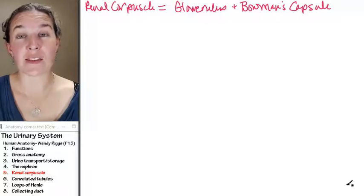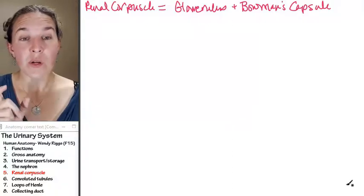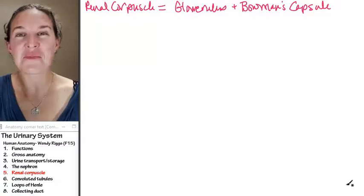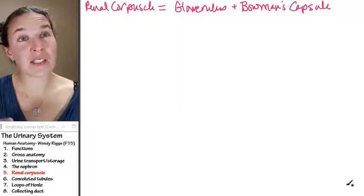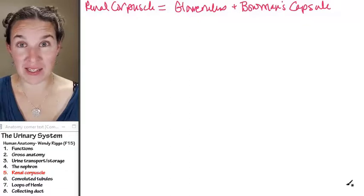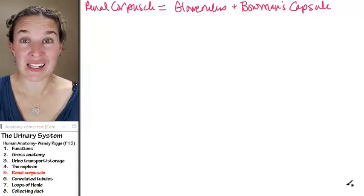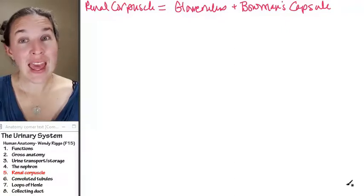Let's take a closer look at the renal corpuscle. The renal corpuscle consists of the glomerulus. The glomerulus was the capillary bed. So glomerulus contains blood and Bowman's capsule.